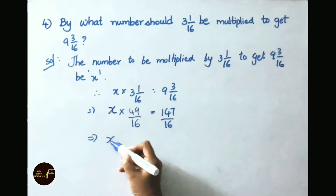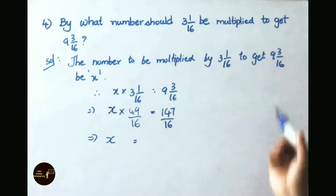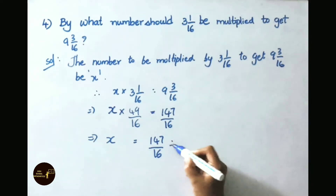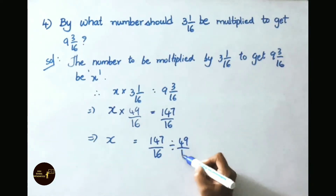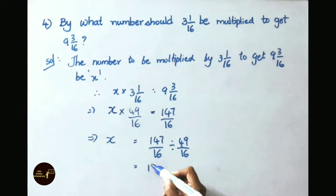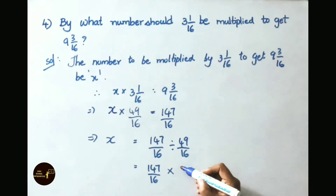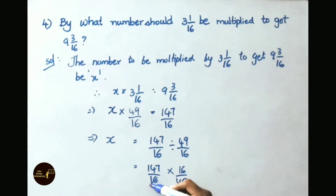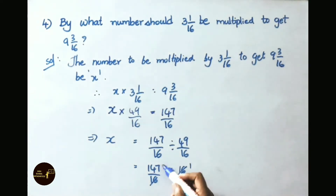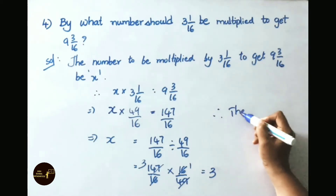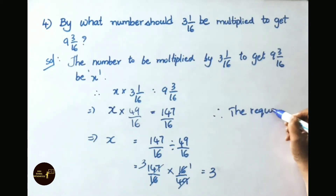That implies x equals 147 by 16 divided by 49 by 16. Changing division to multiplication and writing the reciprocal: 147 by 16 times 16 by 49. The 16s cancel, and 147 divided by 49 is 3. Therefore the required number is 3.